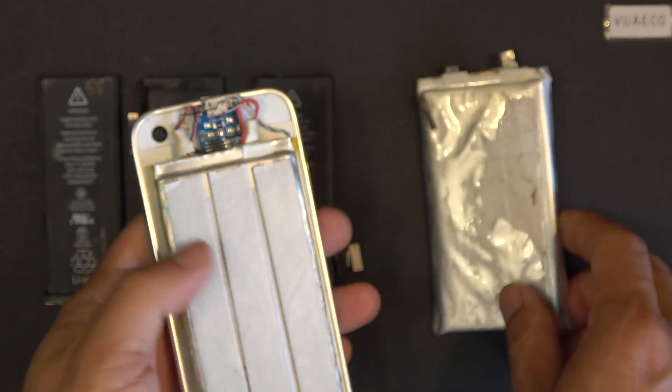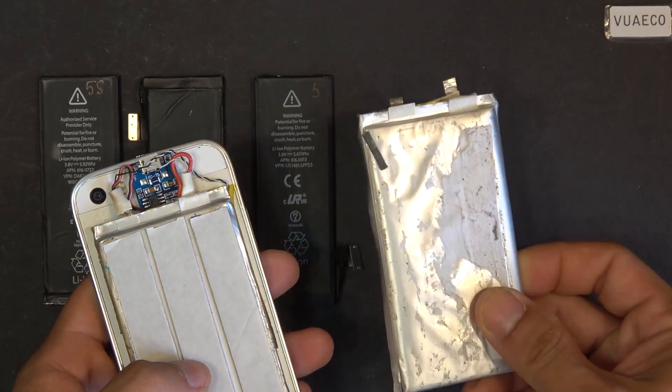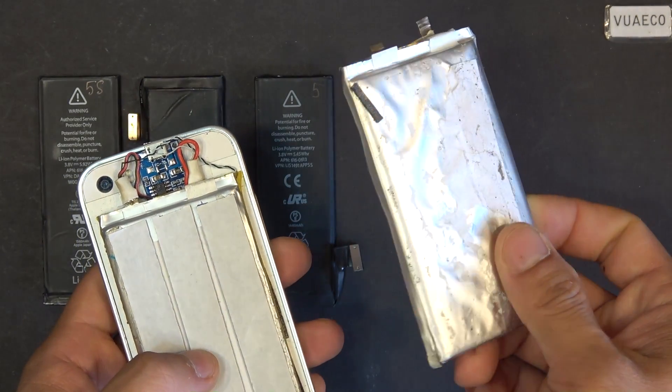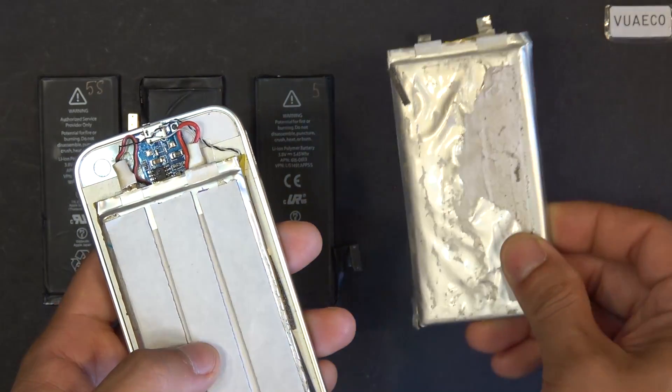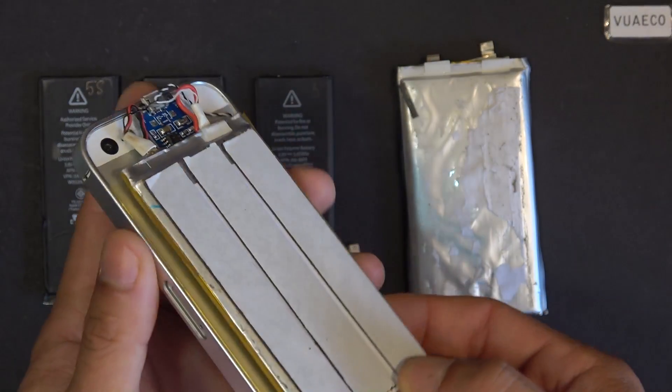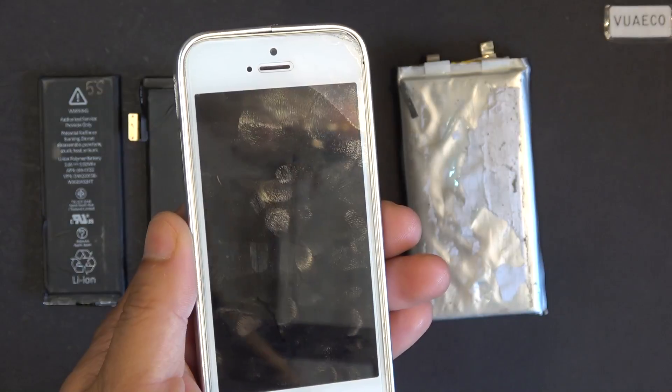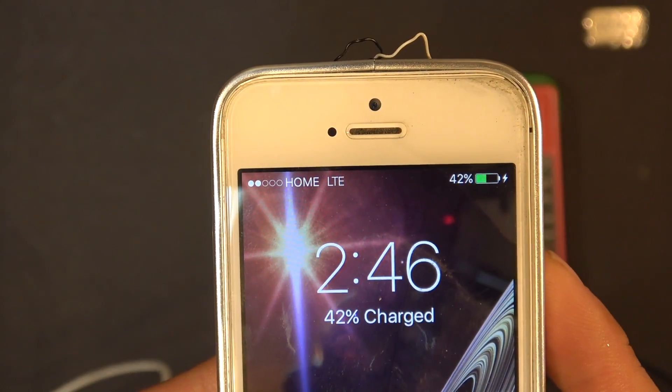This phone has been overcharging my battery and finally it just killed the battery. I can only use the phone down to about 40 to 50%, and then it just shuts down on its own without any warning. Let me demonstrate, 42%.